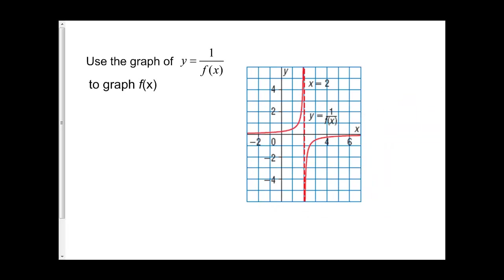Another way this can be asked is if we already have our reciprocal function and want to graph the original function. I start with my invariant points — at positive 1 I'll have a point, and at negative 1 I'll have a point. The other key point on my original graph is at the vertical asymptote, because that's going to be my x-intercept. With three points I can easily connect them, and that gives me the original function f of x. So if the red is 1 over f of x, the black is just y equals f of x.